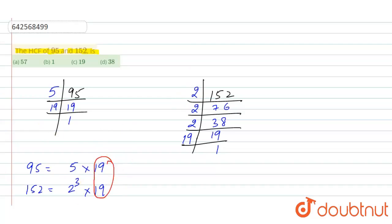Therefore we can say that the HCF is equal to 19, which is option C. Thank you.